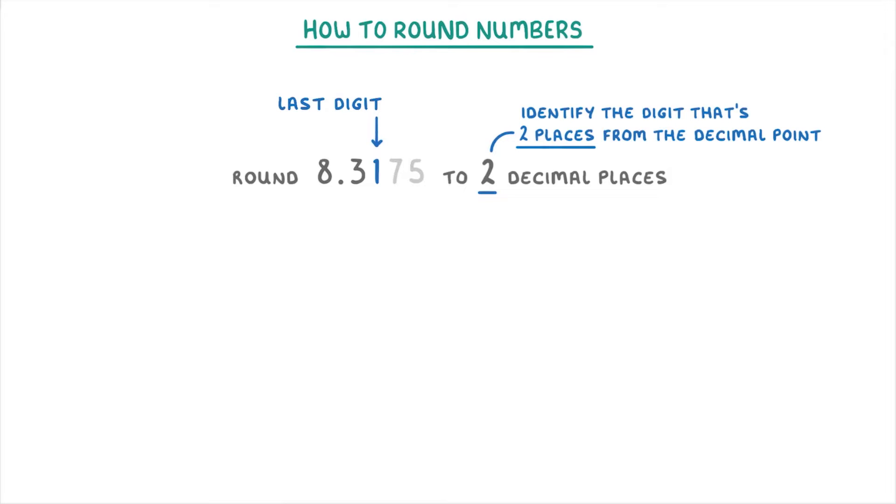The digit to the immediate right of this, so the 7, is called the decider, because this is the one that we look at to decide whether we need to round up or round down.